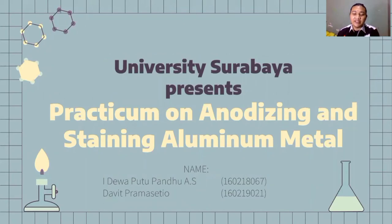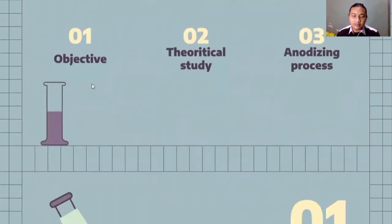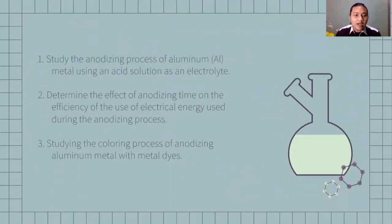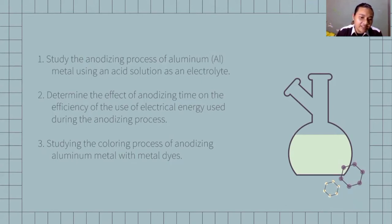The objectives of this practicum are: first, to study the anodizing process of aluminum metal using the acid solution as an electrode; second, to determine the effect of anodizing time on the efficiency of electrical energy used during the anodizing process; and third, to study the coloring process of anodized aluminum metal with metal dyes.